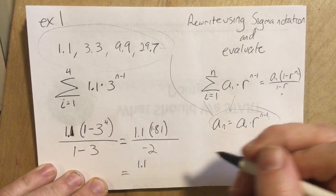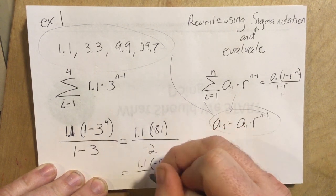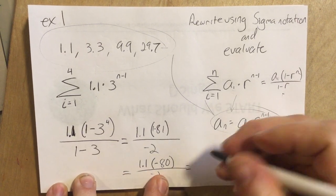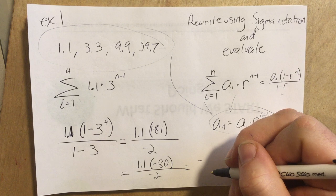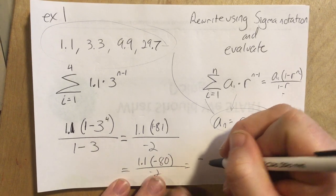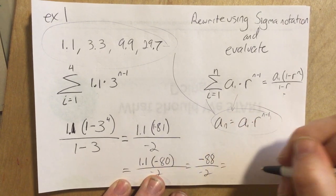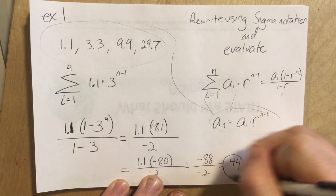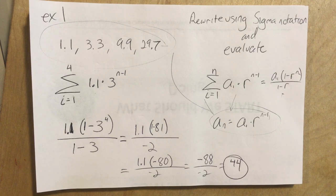So that's 1.1 times negative 80 over negative 2. 1.1 times negative 80, that is negative 88 over negative 2. That's negative divided by negative is positive. 88 divided by 2 is 44. That's our sum of the first four terms. Kind of neat.